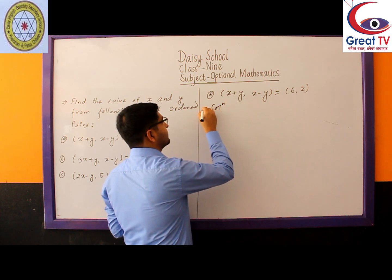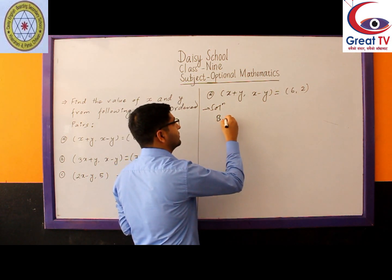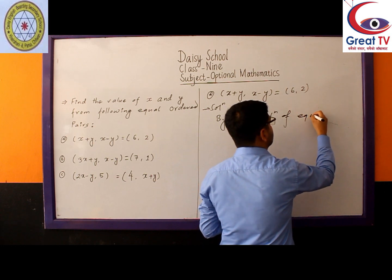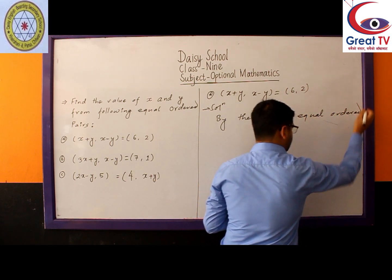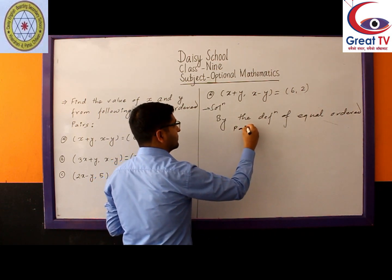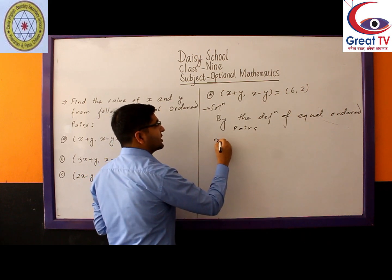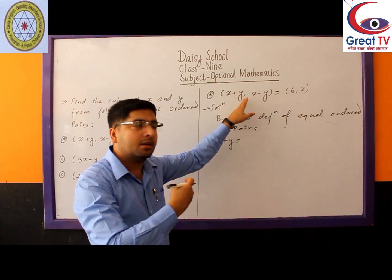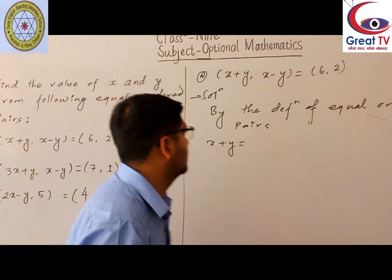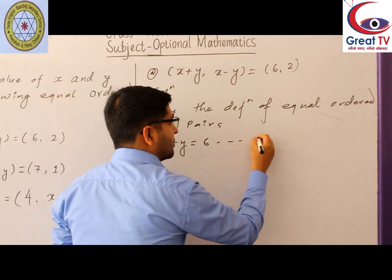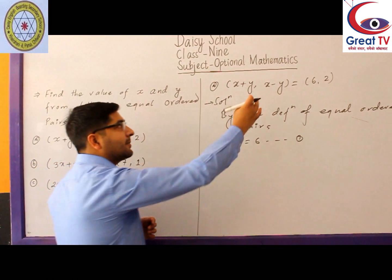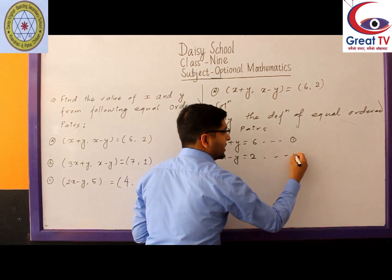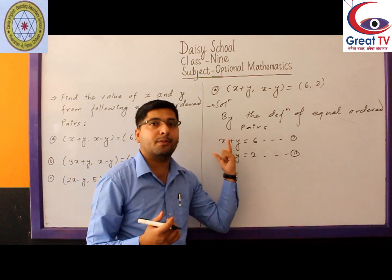By the definition of equal ordered pairs, the X component of the first ordered pair equals the X component of the second ordered pair. So X + Y = 6, which is Equation 1. And the Y component of the first equals the Y component of the second, so X − Y = 2, which is Equation 2. We now have two equations with two variables, X and Y.